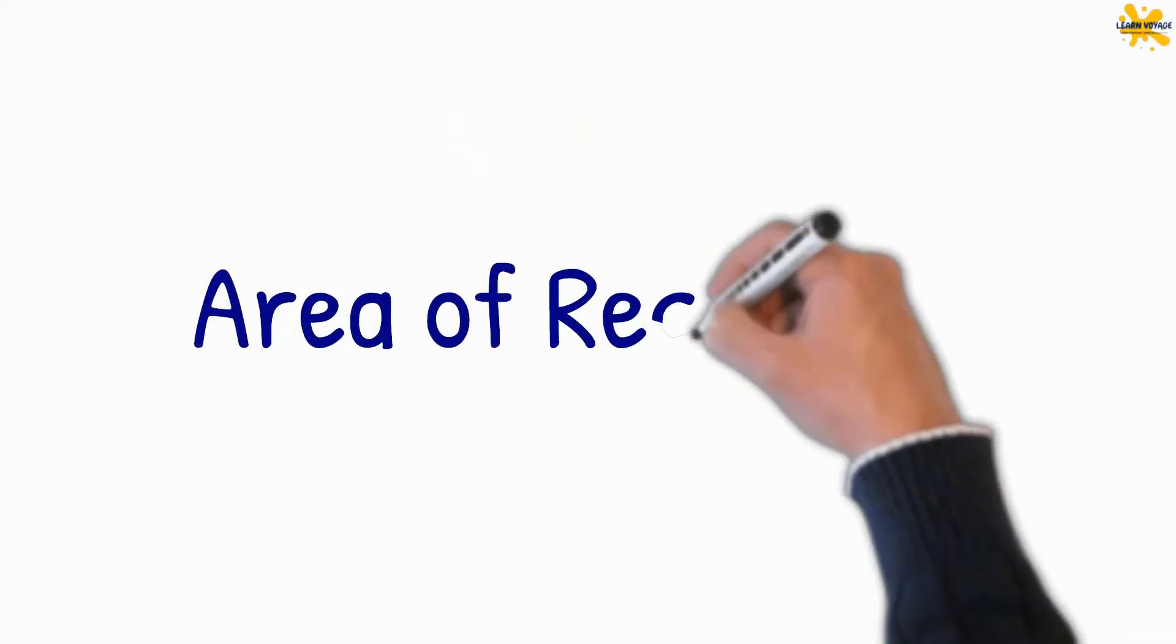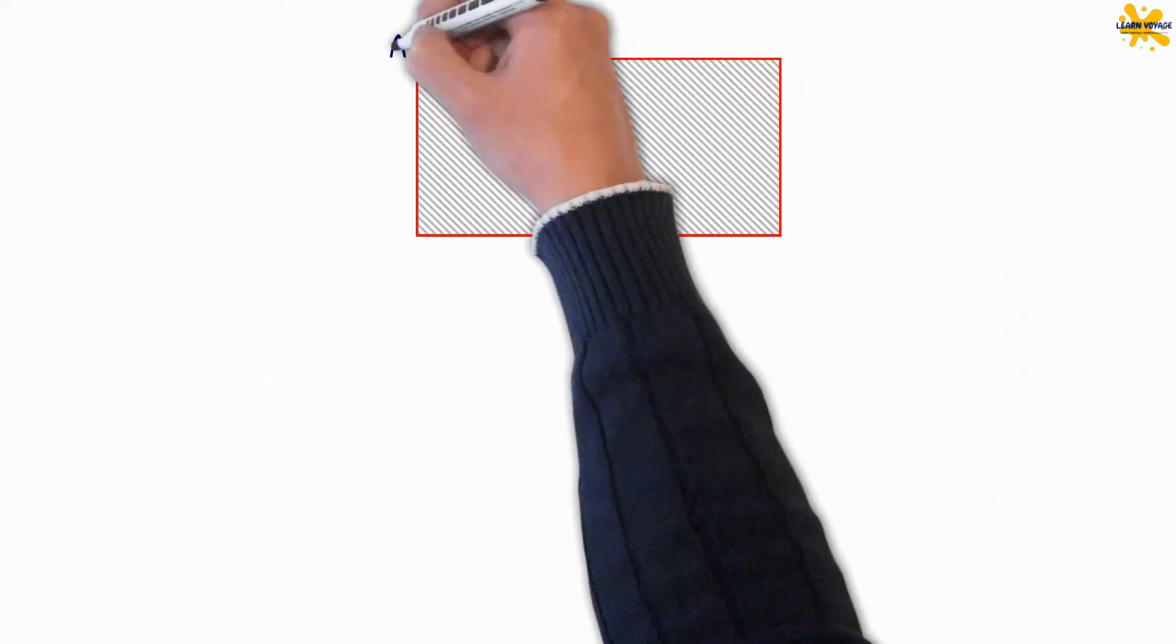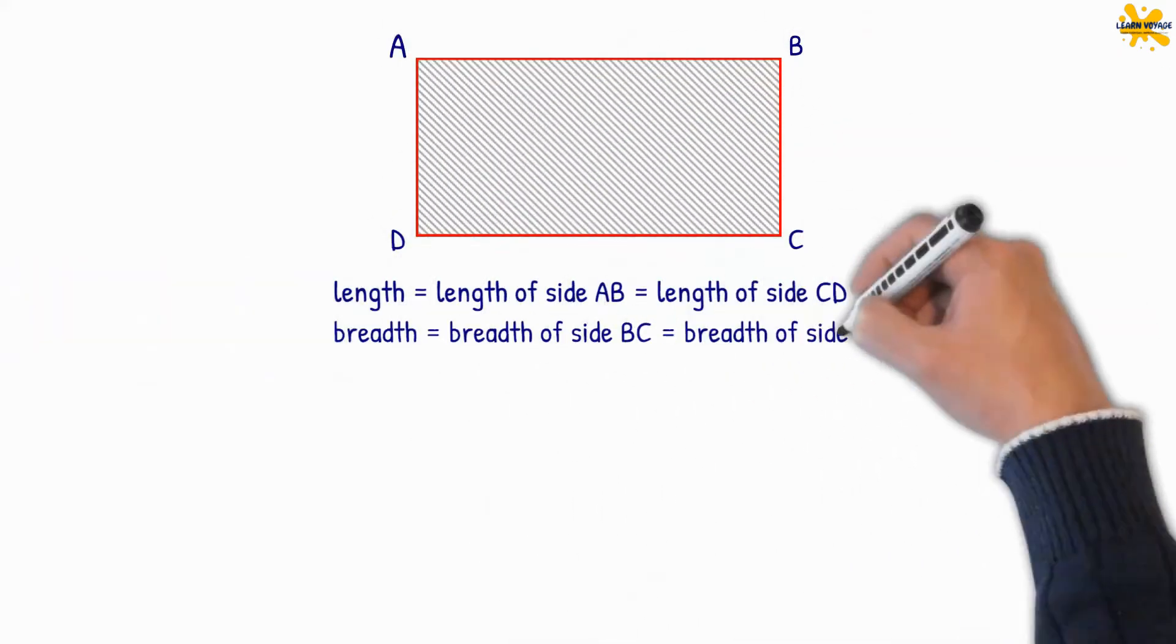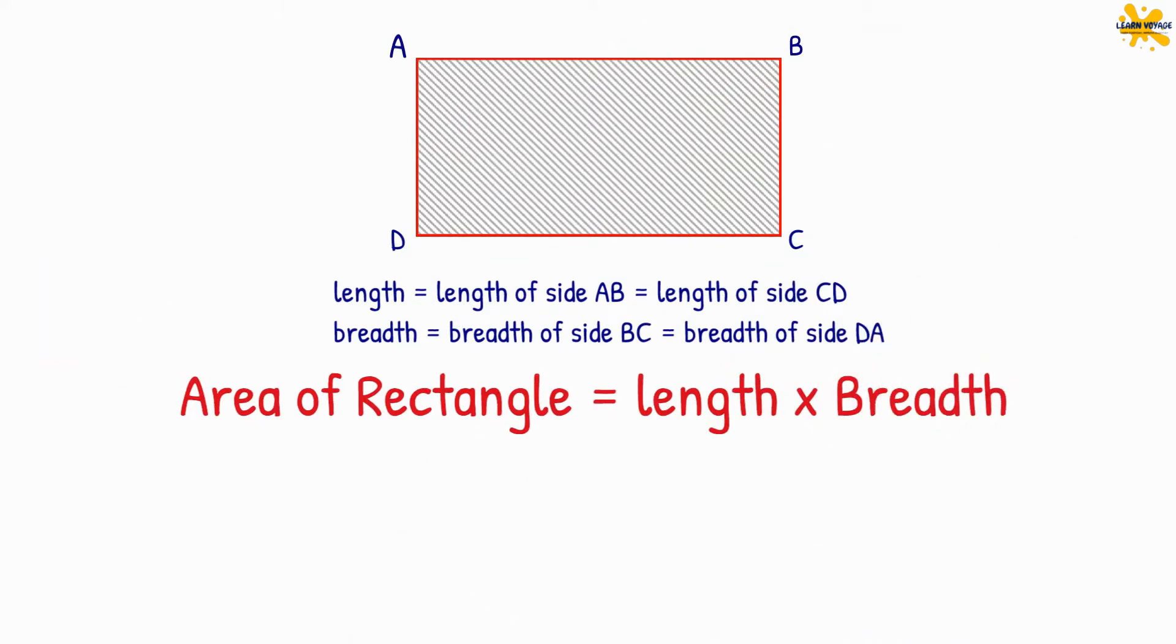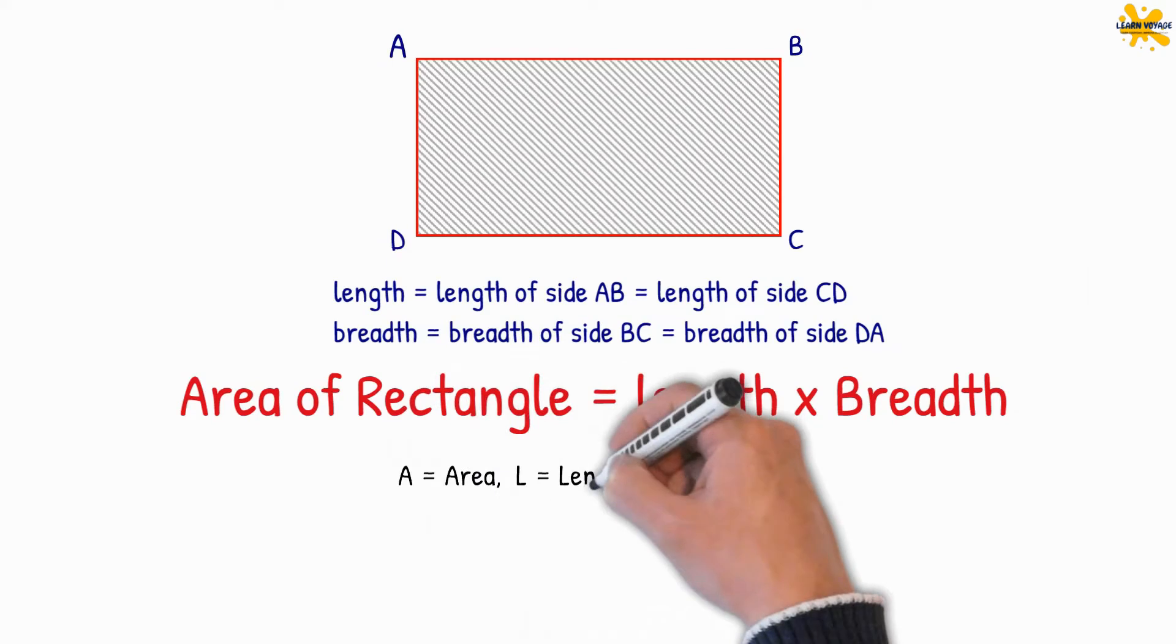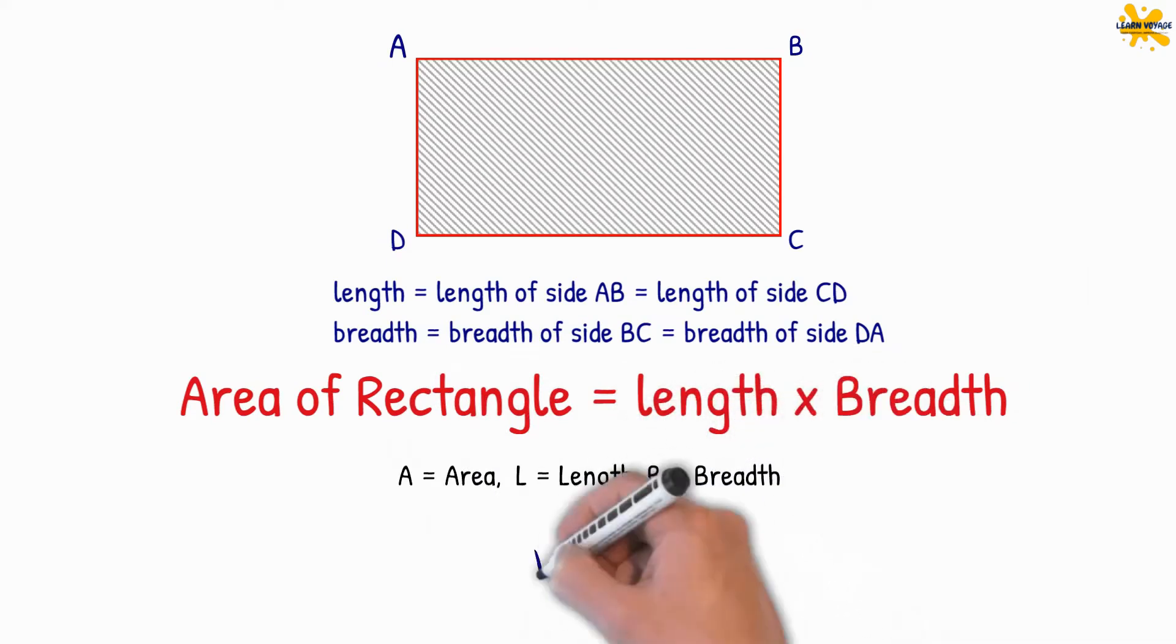Let's learn how to calculate the area of a rectangle. The formula to find the area of rectangle is equal to length into breadth. We will use abbreviation A for area, L for length and B for breadth.